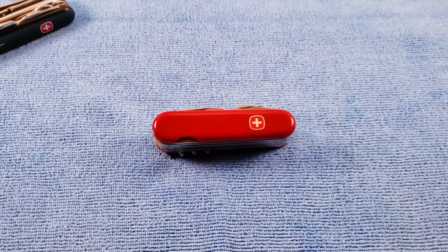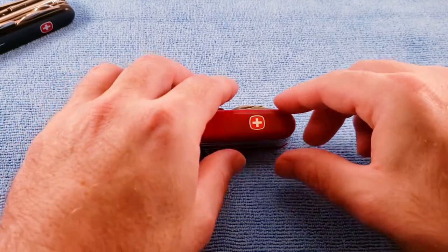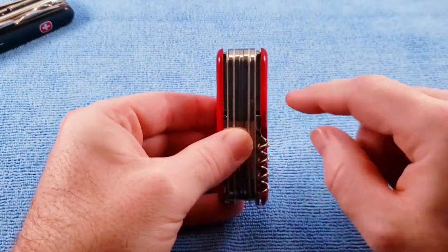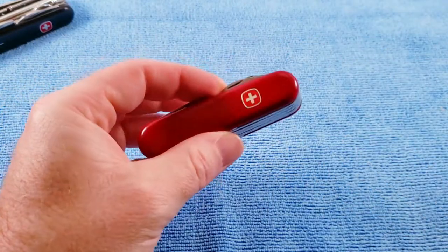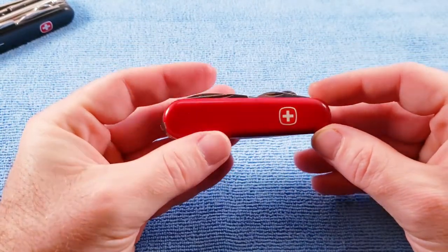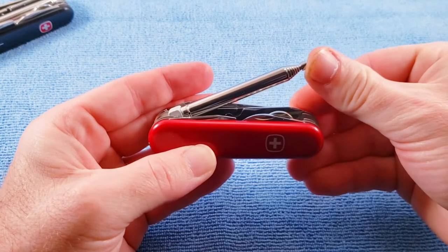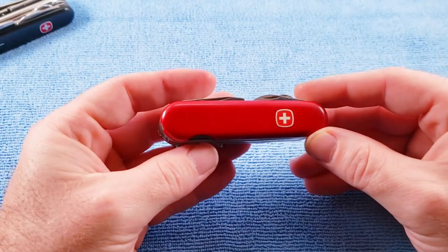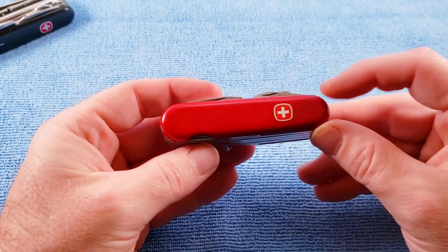The Wenger Manager is an 85 millimeter five-layer knife, right at one inch wide scale to scale. It's a relatively rare knife that has a telescopic pointer and was designed for those that spend time doing presentations.